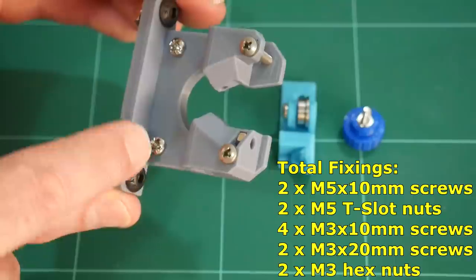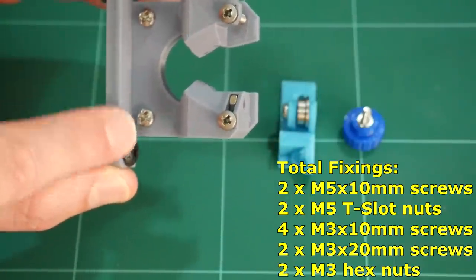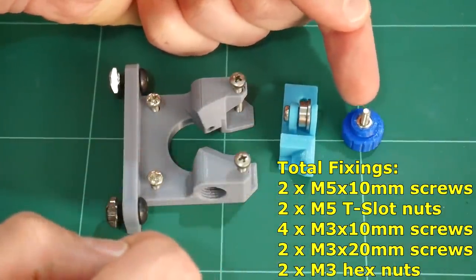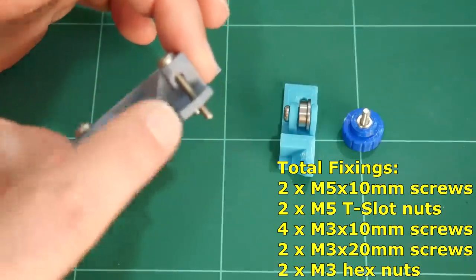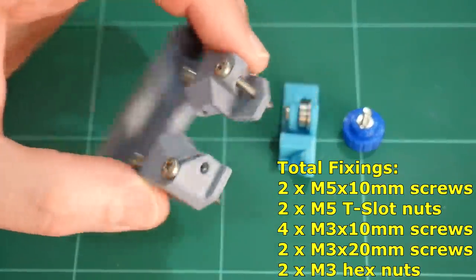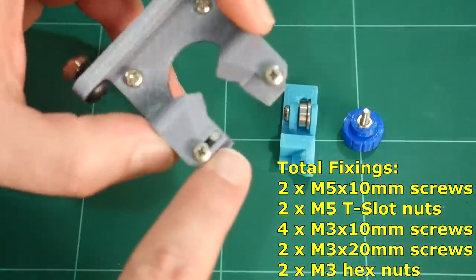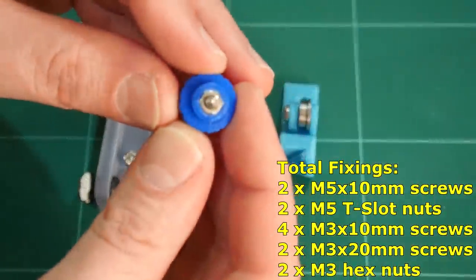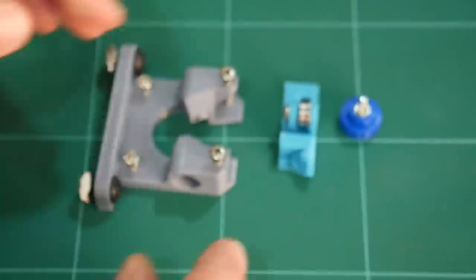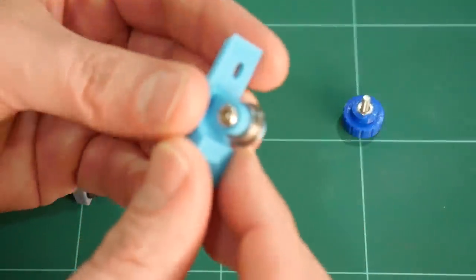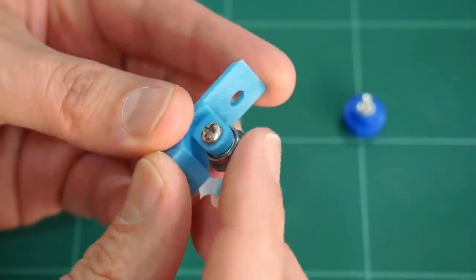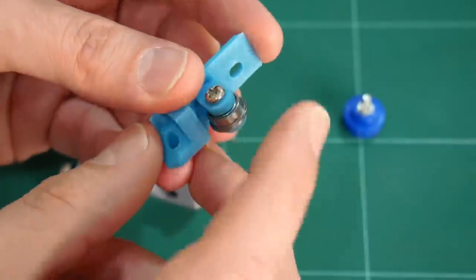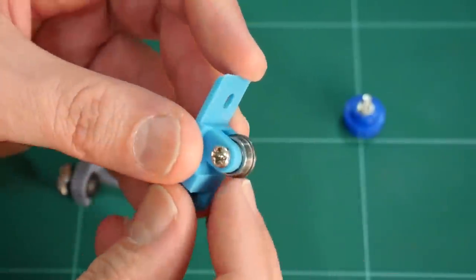You're also going to need M3 by 10 millimetre screws. So, we're going to need two for the motor mount here. We're going to need one for the idler and also one for the Bowden knob. You're going to need two M3 by 20 millimetre screws. You're going to need two M3 hex nuts. One fits inside the motor mount. One fits at the base of the knob. And lastly, you're going to need a 623 bearing for the idler. So, these are the same flanged bearings that we're currently using on the Hypercube. The flanged bearings will work with this. Otherwise, if you don't have a flange, that's okay. The non-flanged version will also work.